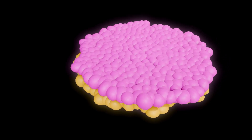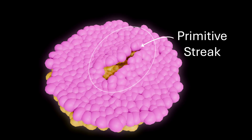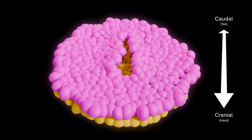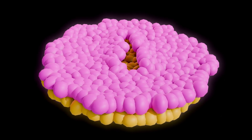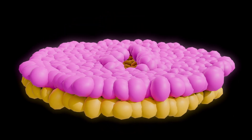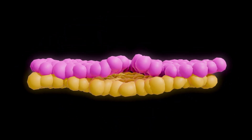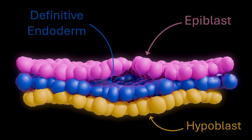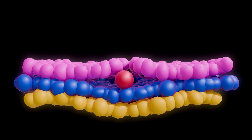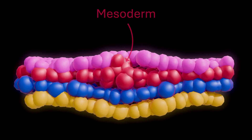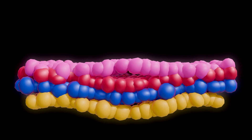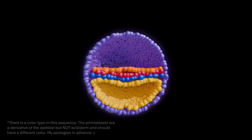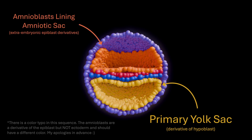The first sign of gastrulation is a primitive streak. It's a groove running from head to tail on the epiblast — and note that that's actually the first time I said head or tail, because we're finally defining our body's first axis. Epiblast cells stream inward here, pushing aside the hypoblast to form the definitive endoderm. Others ingress through the primitive streak to form the mesoderm, and those that remain at the surface become the ectoderm.